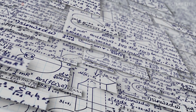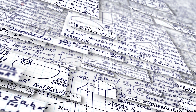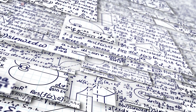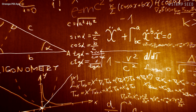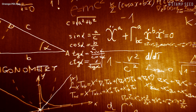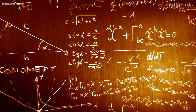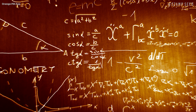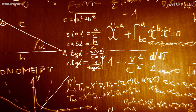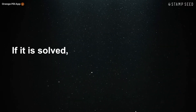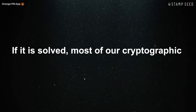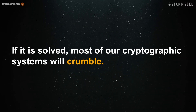If you choose a large enough prime number, division is practically impossible to do when attempting to reverse point multiplication. This is the discrete log problem and is the basis of modern cryptography. If it is solved, most of our cryptographic systems will crumble.